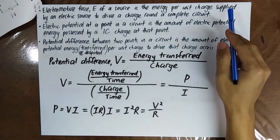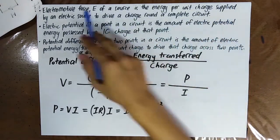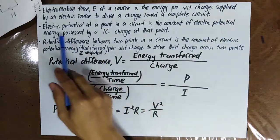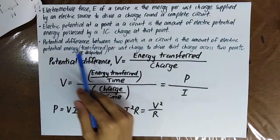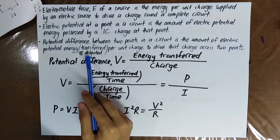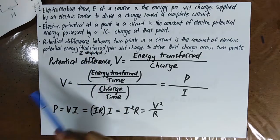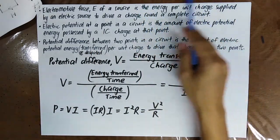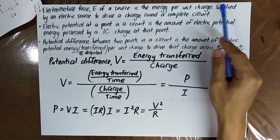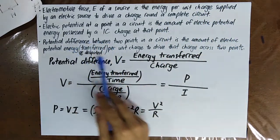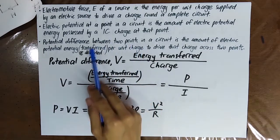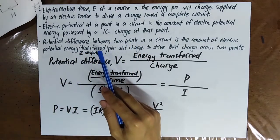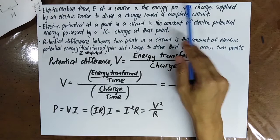Notice that for the EMF I use the word 'supplied', but for the potential difference I use the word 'dissipated'. Because EMF is the energy given to the charge, and potential difference is the energy used by the charge. So please choose your words correctly.